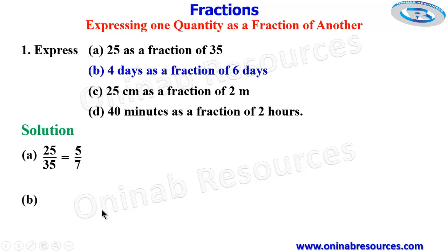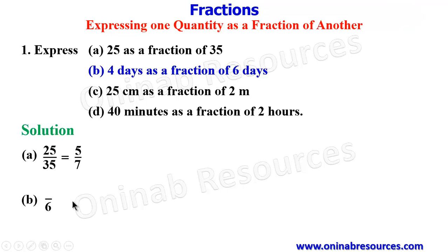We go to B. For B, we have to express 4 days as a fraction of 6 days, which means 6 days will be the denominator, while the numerator will be 4. Then simplifying, 2 divides both 4 and 6, and that will give us 2 over 3. So that's all for B.